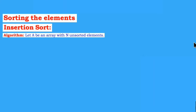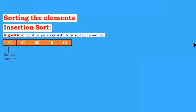Here you can see we have the algorithm — let A be an array with n unsorted elements. Let us take one example: 70, 60, 50, 10, and 80. Let us consider 70 is in a correct position and the element 60 is the key.